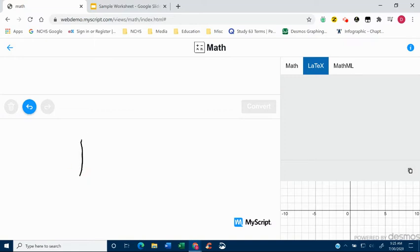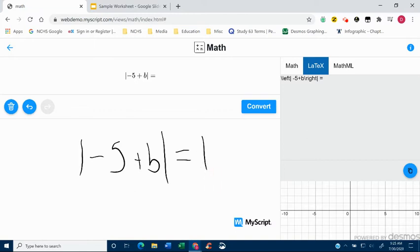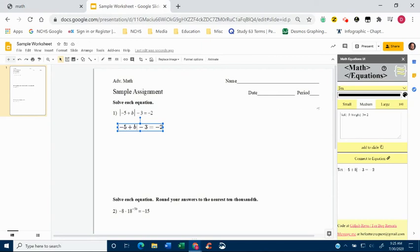So now there's no way to just erase on here, but I can delete that, and I can say, okay, well, I know I'm going to have absolute value of negative 5 plus B, absolute value equals, and when I add three to the other side of that negative 2, I'm going to have a 1. So I can copy, and then paste. I'm going to leave it in text mode, and then add the slide.